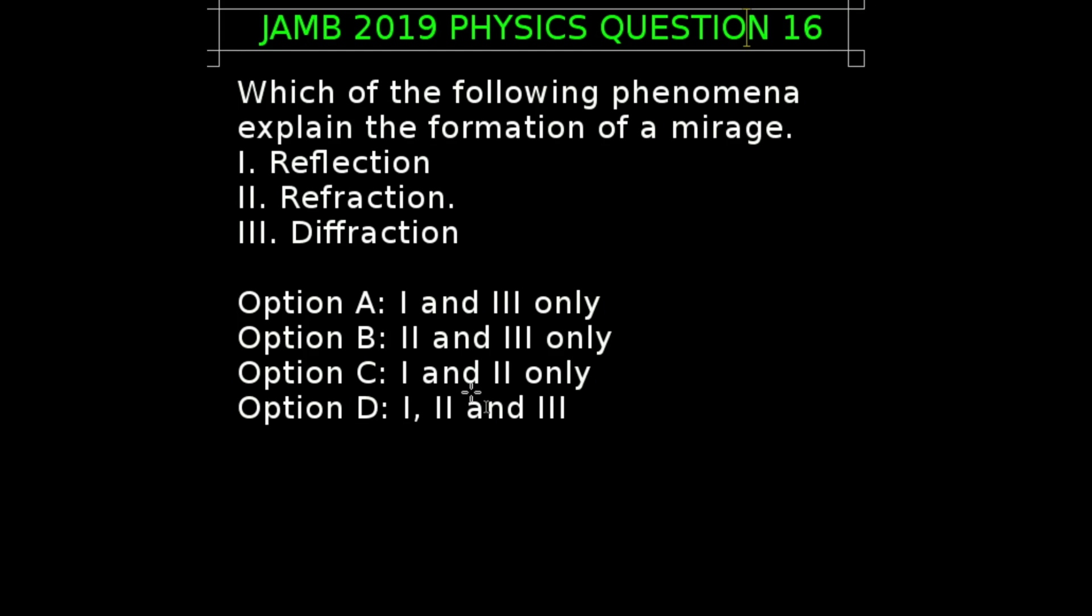So II is one of the correct options. And also, mirage can be formed by the total internal reflection of light through layers of air of different densities. So reflection is also implicated in the formation of mirage. So the two correct options are reflection and refraction, which corresponds to option C.